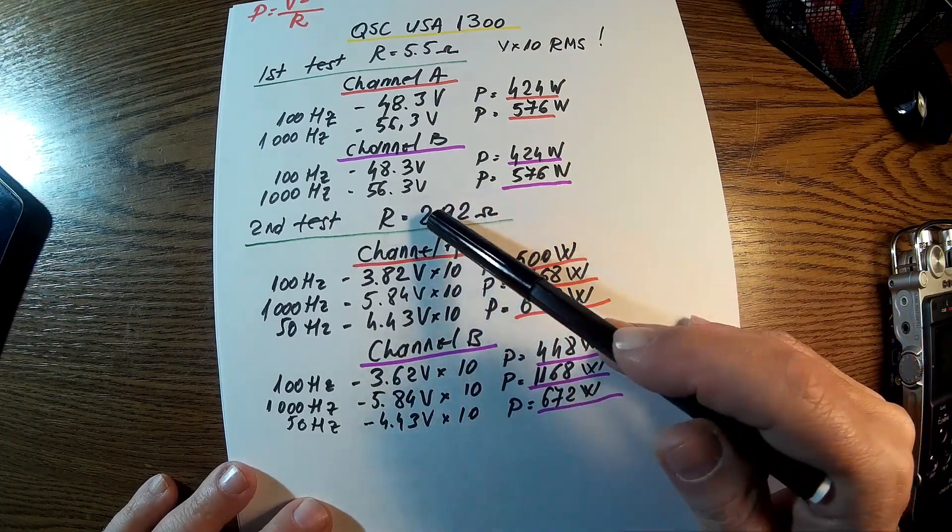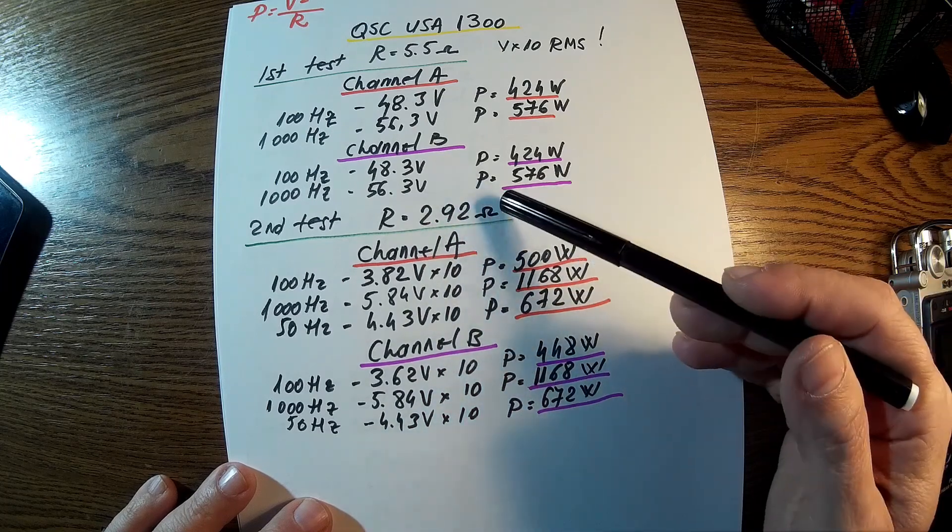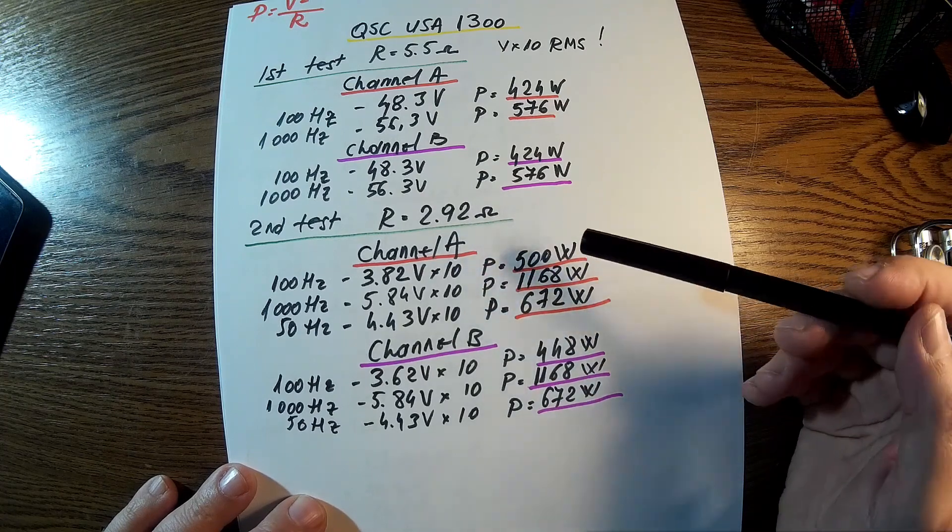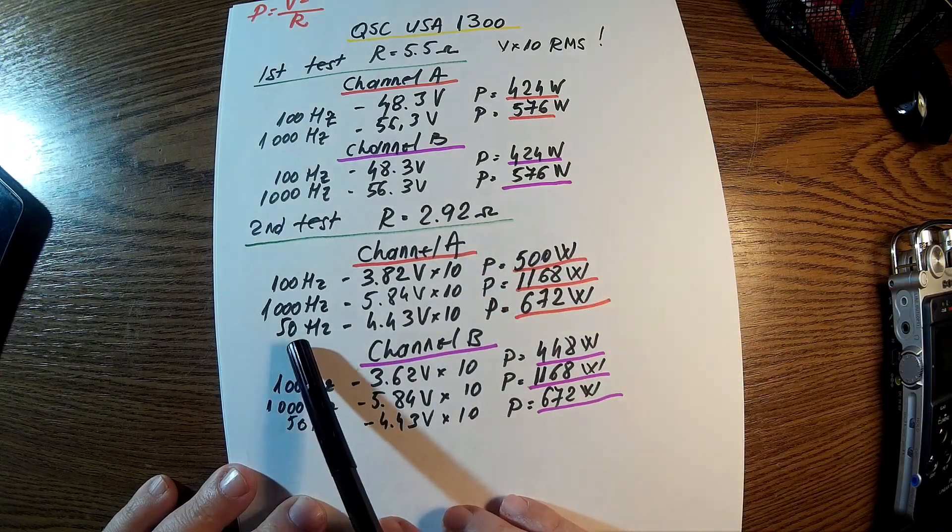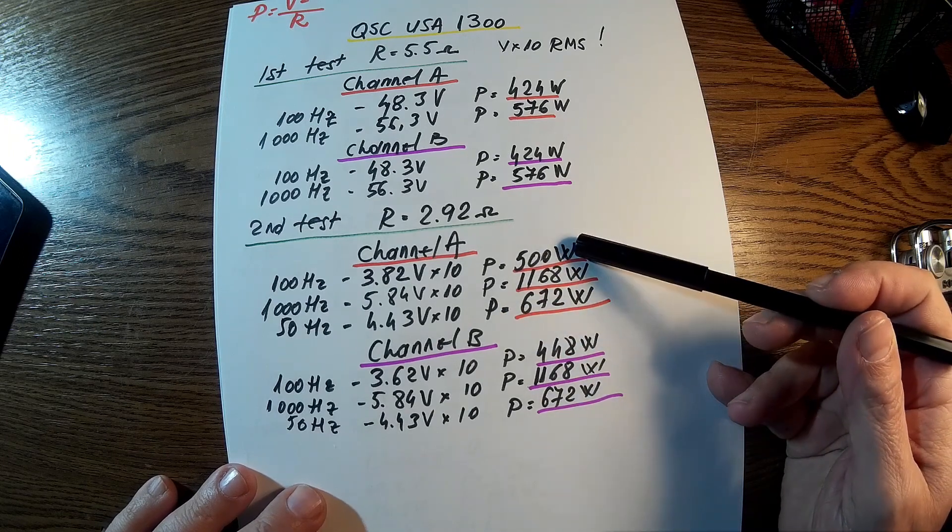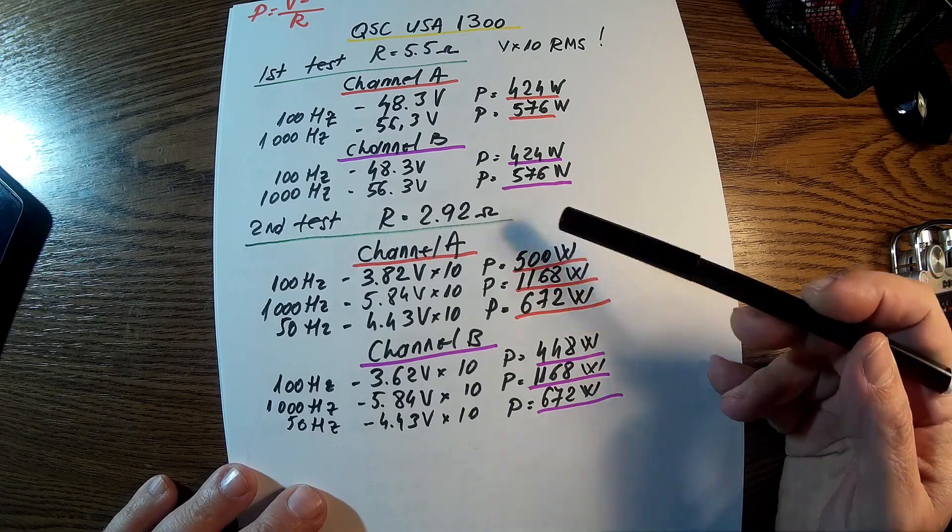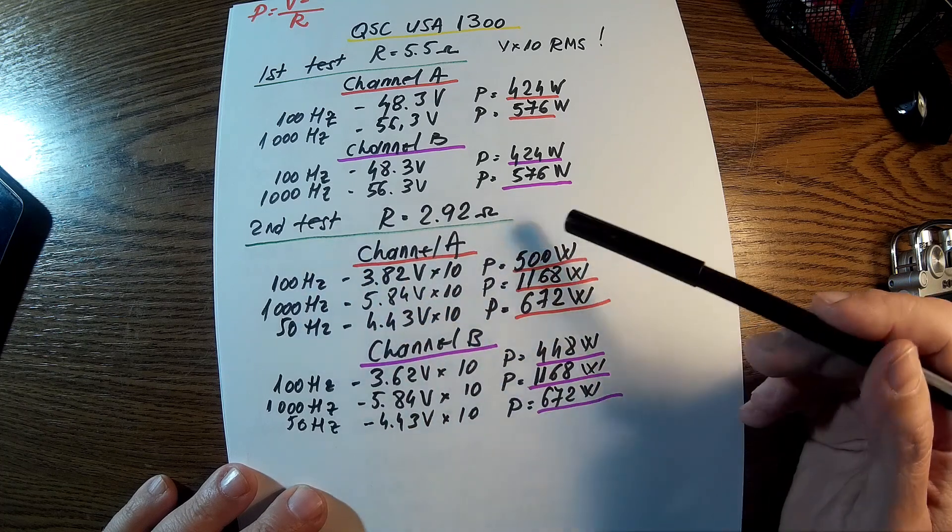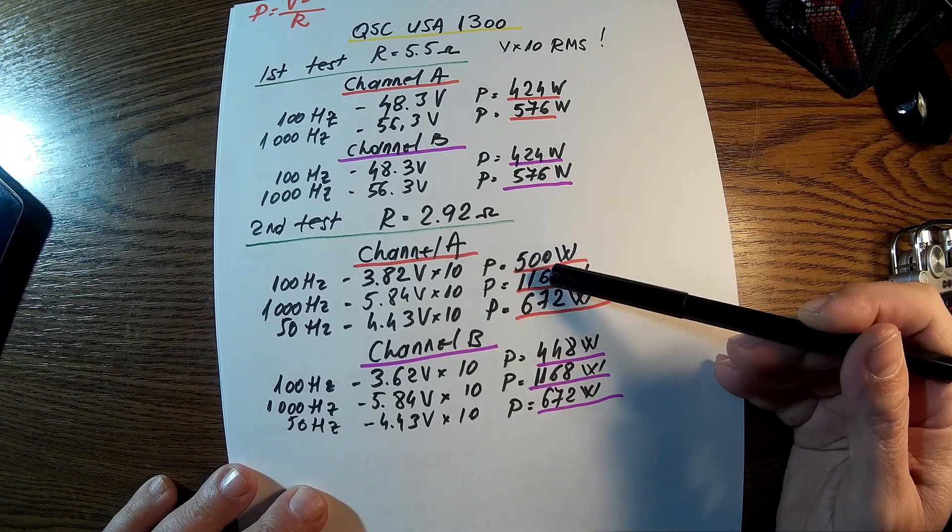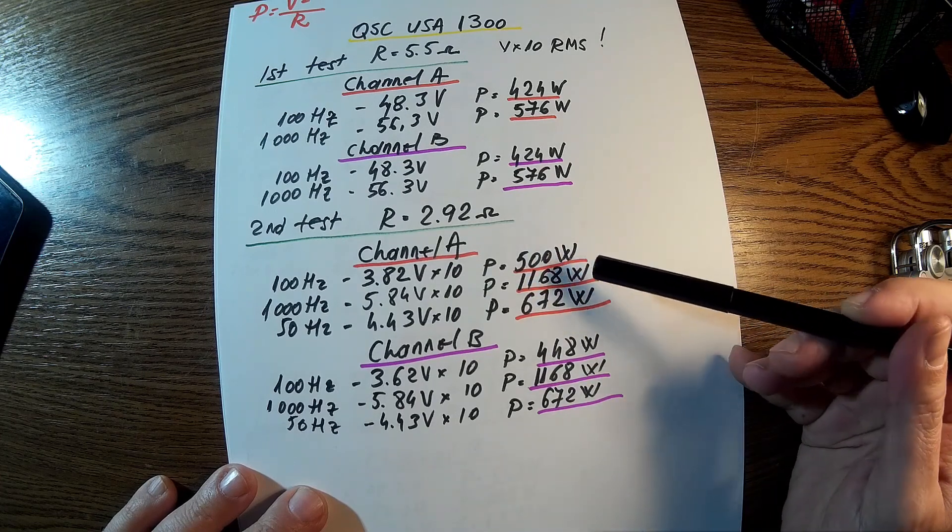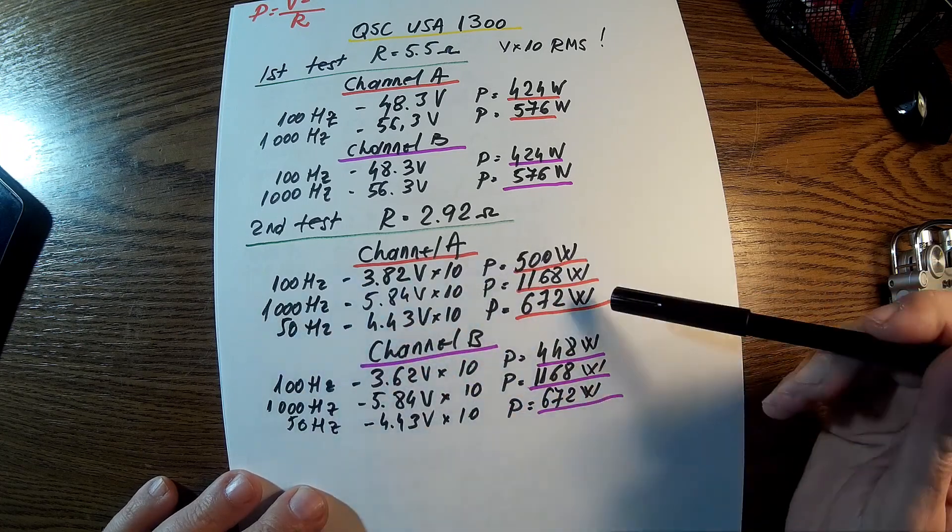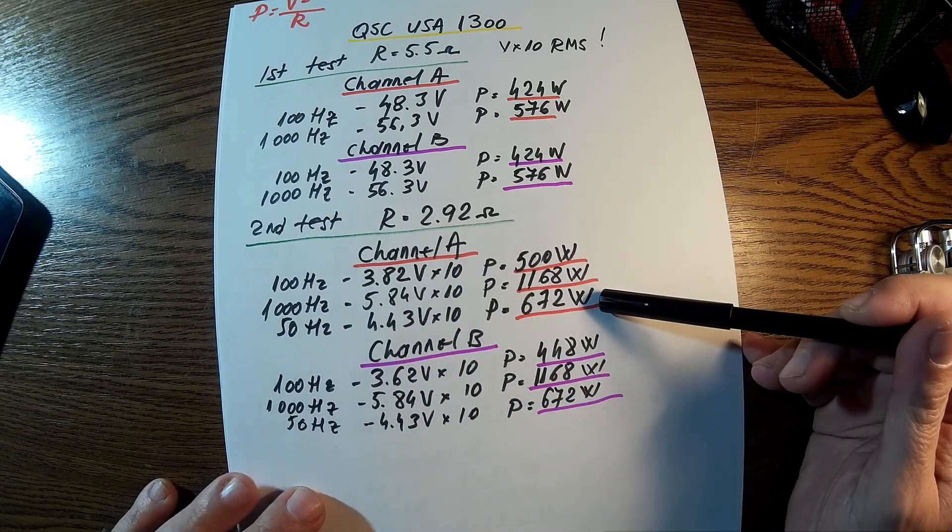Now we have 2.92 ohms, that's the second load and the second test. Channel A, I introduced the 50 Hz test too, I was curious about that. We have 100 Hz, 500 watts. 1000 Hz, 1168 watts. Perfect, like in the book, even better. 50 Hz, 672 watts. Nice.